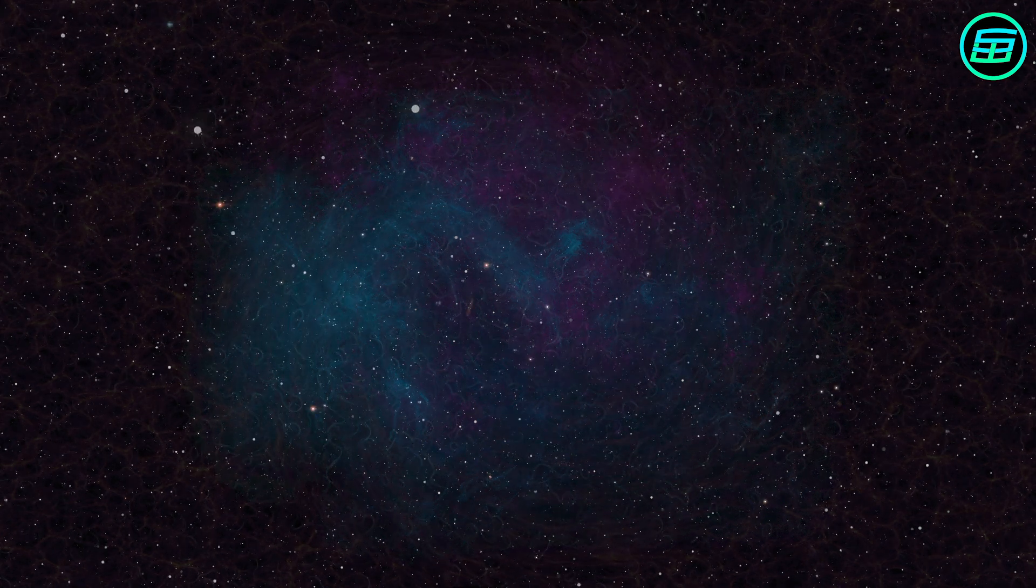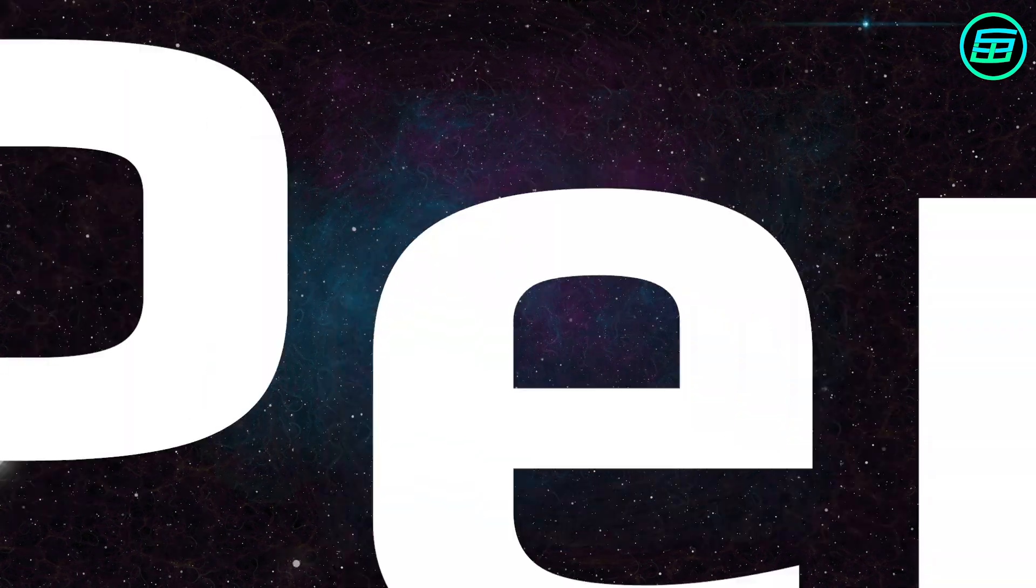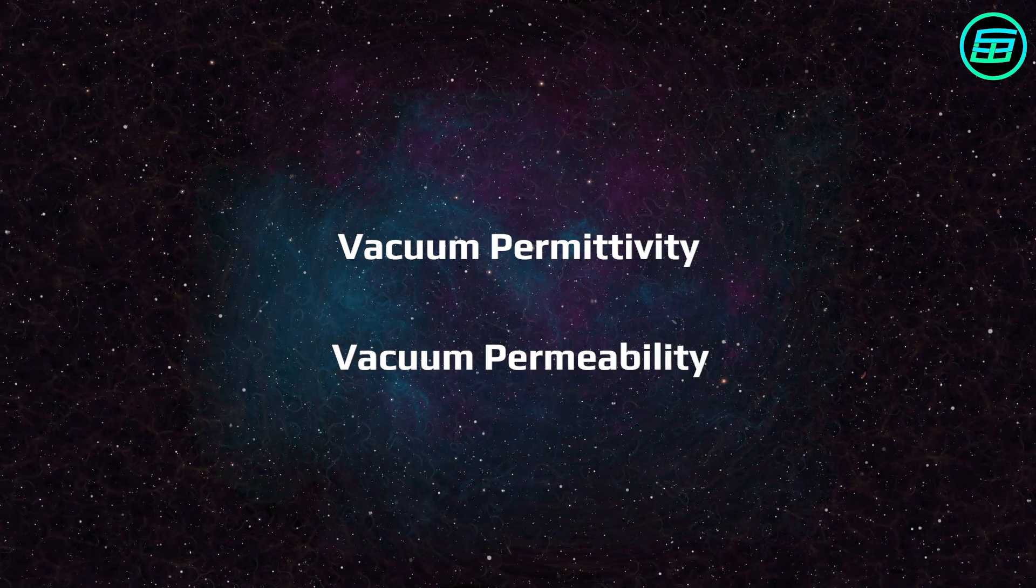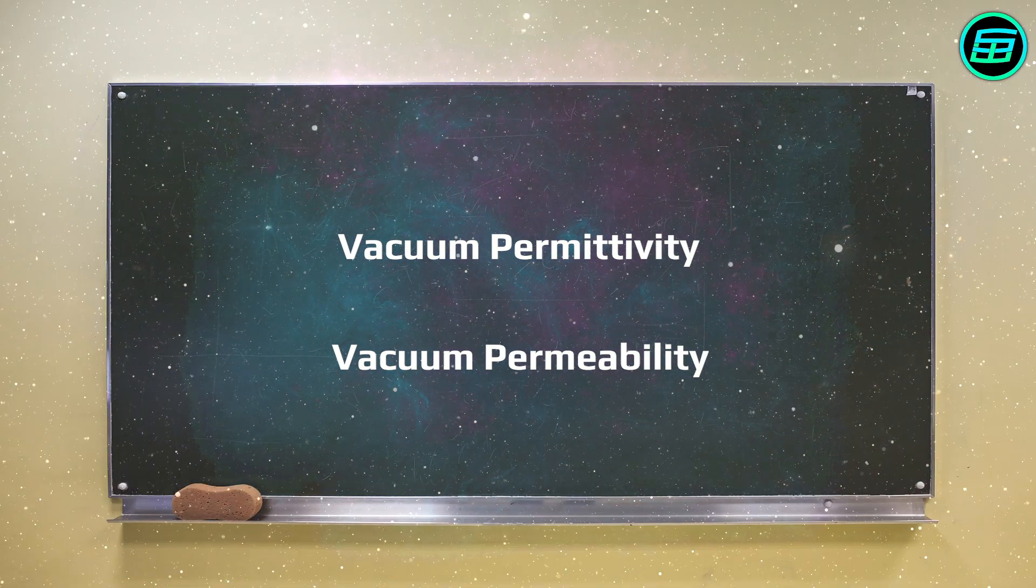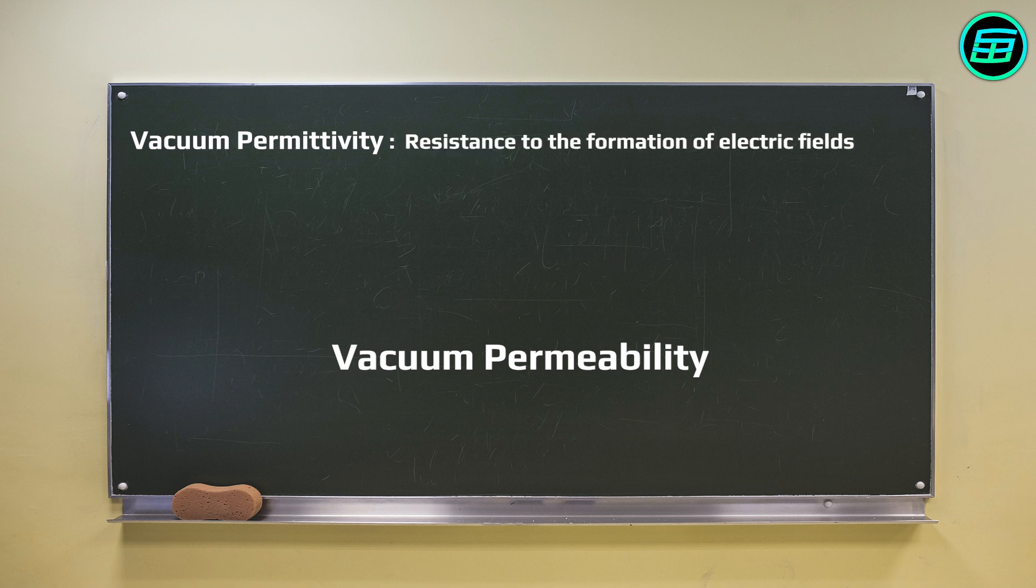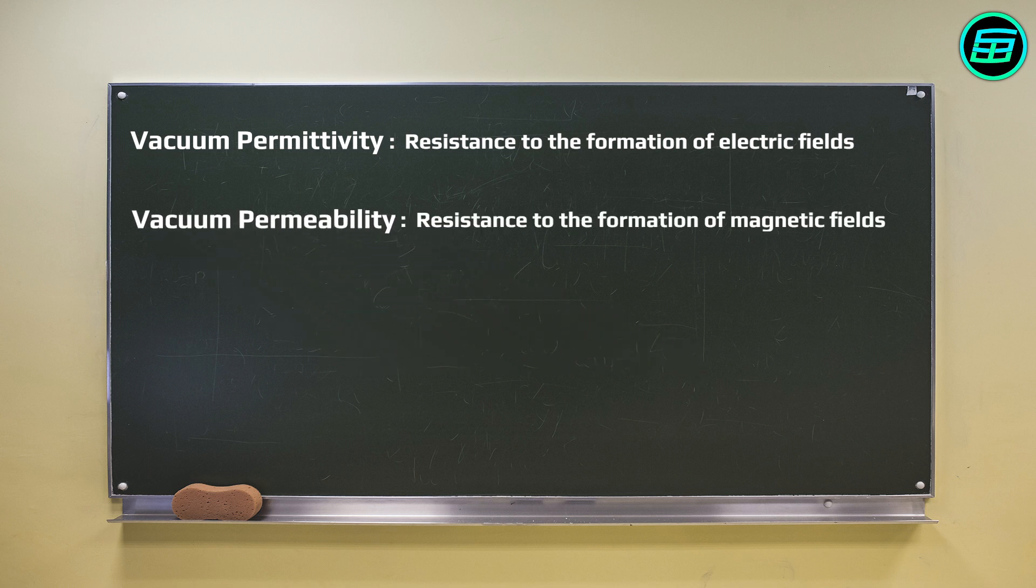Among the properties to which the unseen components of empty space give rise are vacuum permittivity and vacuum permeability. In physics, vacuum permittivity can be thought of as resistance to the formation of electric fields, whereas vacuum permeability can be thought of as resistance to the formation of magnetic fields. So by its very nature, our universe sets limits on the speed of interactions between magnetic and electric fields.